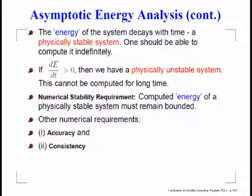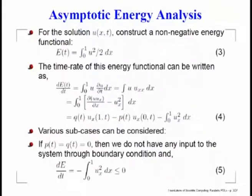However, in some physically unstable systems, dE/dt can be positive. The clue is in the previous result: if we produce some kind of heat addition through those boundary terms, we can make dE/dt either zero or positive. If we keep adding heat from both sides of the rod, the temperature will grow and dE/dt can keep increasing — that is what we mean by a physically unstable system.